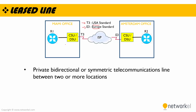As you can see in the diagram, we have two customer offices with CSU and DSU devices which terminate the ISP connection. The two offices communicate with each other over the ISP's dedicated link.